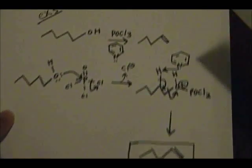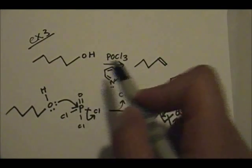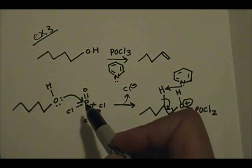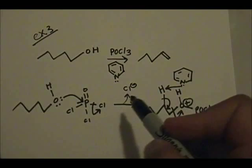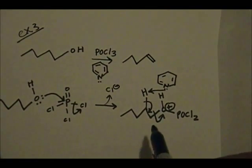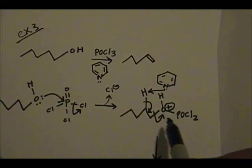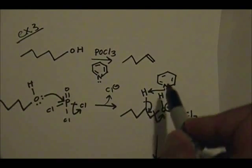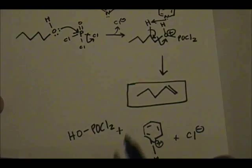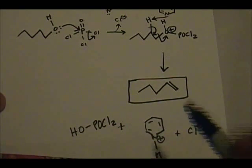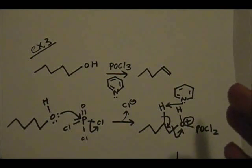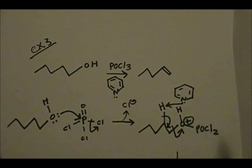Brief recap of example three: primary alcohol with POCl₃ and pyridine gives the alkene product. Oxygen forms a bond with the phosphorus of POCl₃, chlorine gets kicked off as a byproduct. You form the intermediate with the leaving group. Kick off the leaving group, form the double bond, pyridine picks up the H, and all you form is your alkene product plus some byproducts. These three examples cover what you need to know about reactions of alcohols to alkenes.